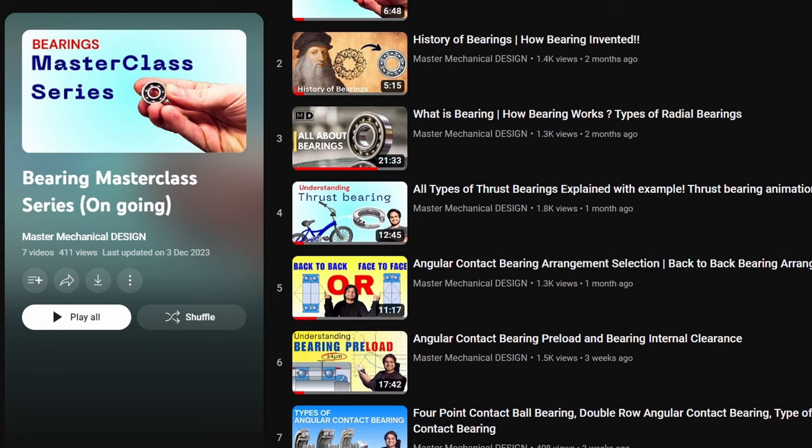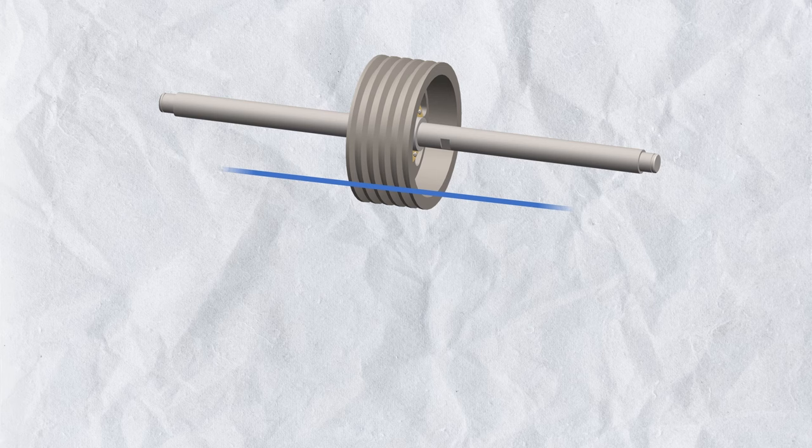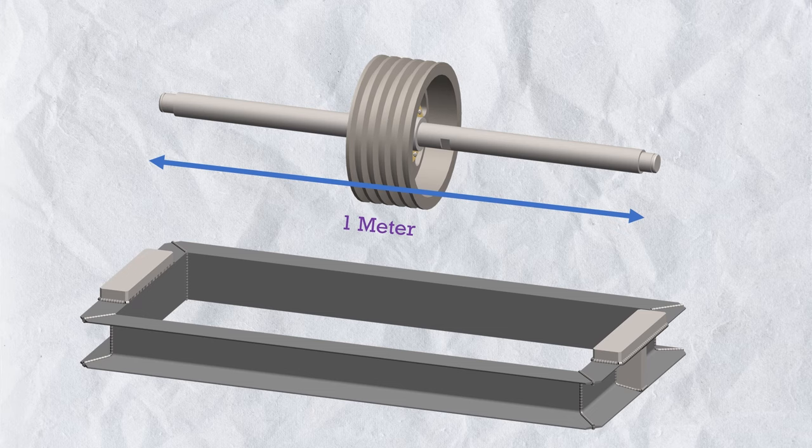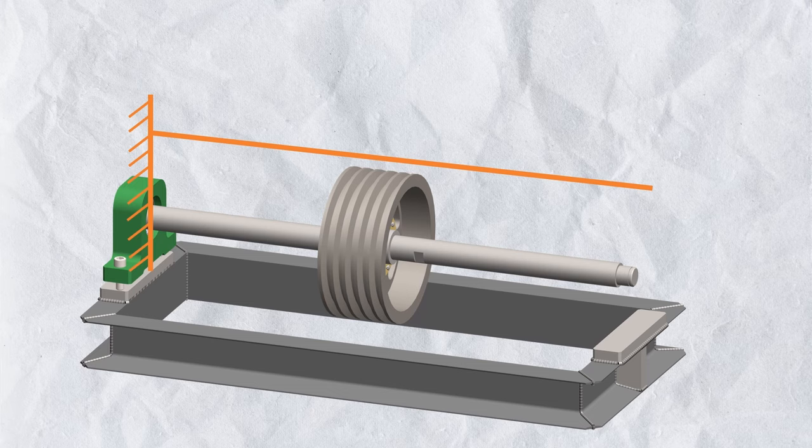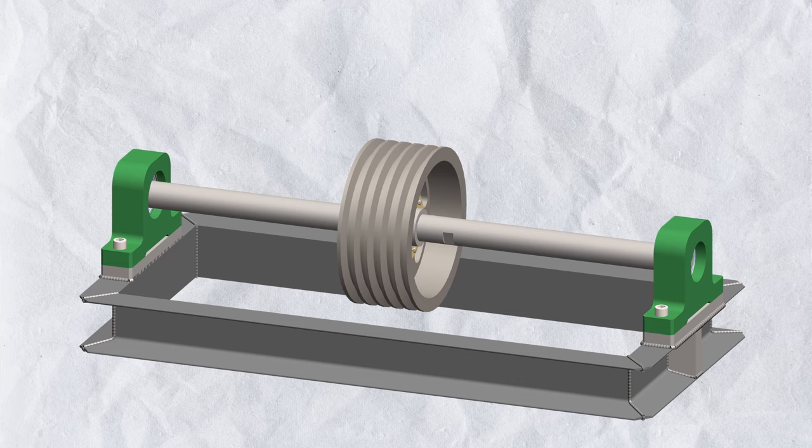In applications where we need to support a long shaft — for example, a shaft of 1 meter length located over a welded frame — we cannot use a single bearing because the cantilever would be too great. We have to use two bearings, one at each end, and in these conditions misalignment is created.